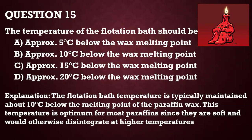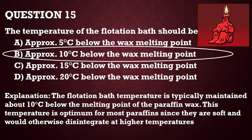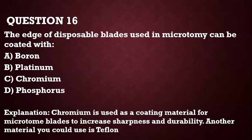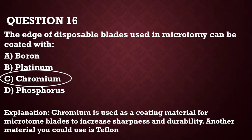Question number 15: the temperature of the flotation bath should be approximately 5 degrees centigrade below the wax melting point — actually, it should be 10 degrees centigrade below the wax melting point. This is because the paraffin wax is soft, and if you go higher than that, it will disintegrate and you will not get the thin tissue sections you want. Question number 16: the edge of disposable blades used in microtome can be coated with chromium or teflon, which helps to increase the sharpness and durability of the blade.